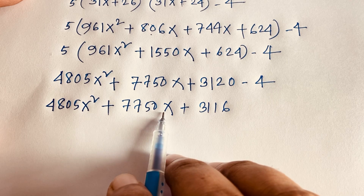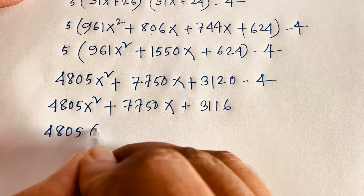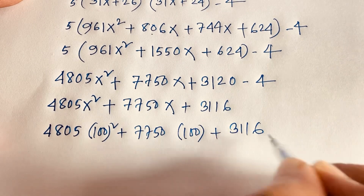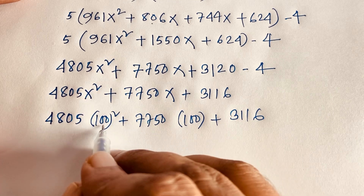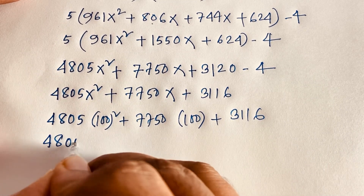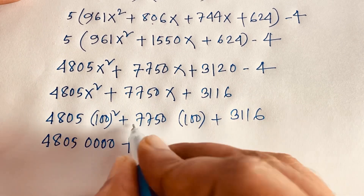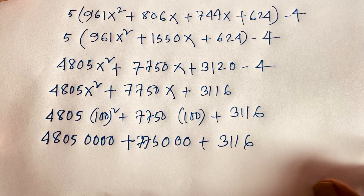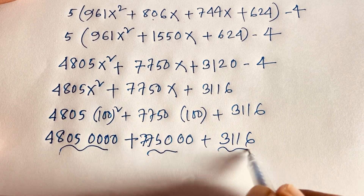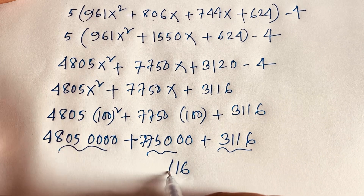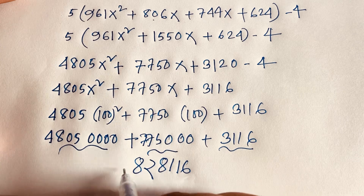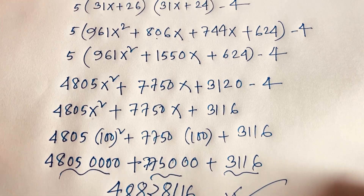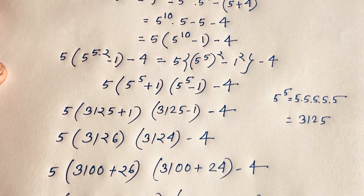Substituting x equals 100: 4805 times 100 squared plus 7750 times 100 plus 3116. Since 100 squared is 10000, we get 48,050,000 plus 775,000 plus 3116. Adding these values together, the final answer is 61,182,884. Thank you all — if you enjoyed this video, please subscribe to my channel for more interesting videos. Goodbye, take care.